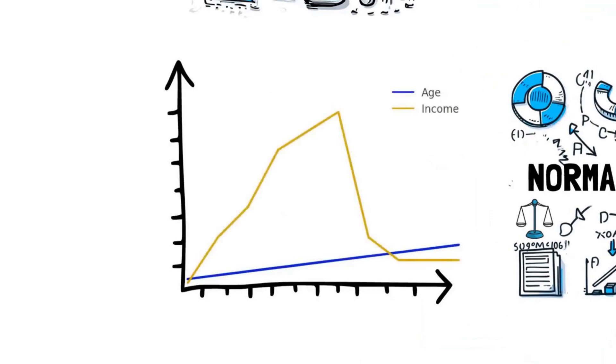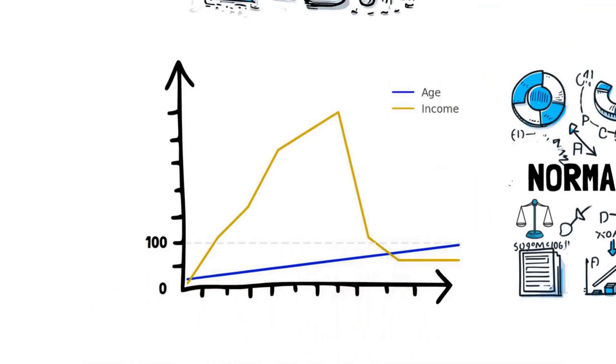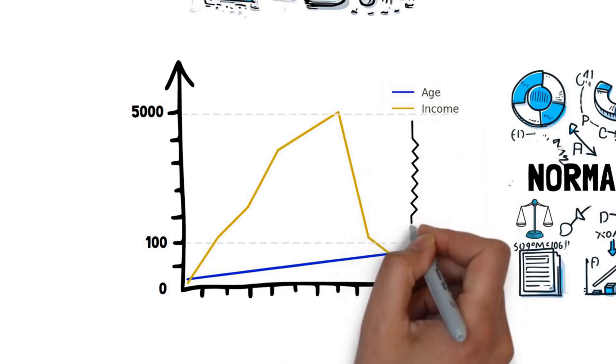Imagine a dataset that contains age, ranging from 0 to 100, and income, possibly ranging from thousands to millions. These two features have vastly different scales.